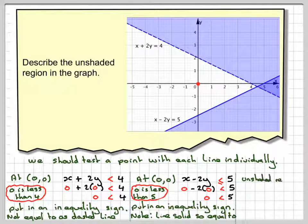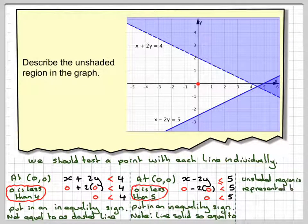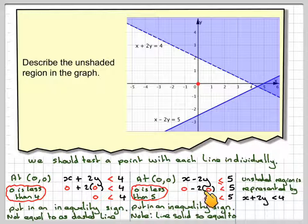So the unshaded region is represented by x plus 2y is less than 4 and x minus 2y is less than or equal to 5.